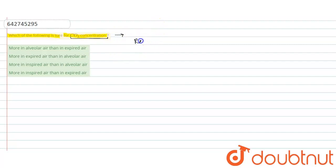Hello everyone. Now we are going to understand this question. Our question asks: which of the following is true for CO2 concentration? We have to find the true statement for CO2 concentration. The options include: more in alveolar air than in expired air, and more in expired air than in alveolar air. This question is about our respiratory system.